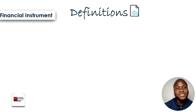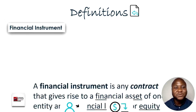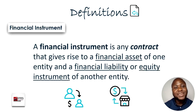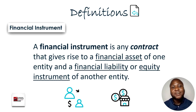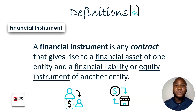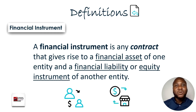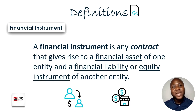Let's look at those important definitions under IFRS 9, starting with the big one: the financial instrument itself. A financial instrument is any contract that gives rise to a financial asset of one entity and a financial liability or equity instrument of another entity. What that means is that when you have a financial instrument, there is a contract — it may not be written, it may be implied, but the key point is that a contract exists.